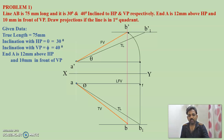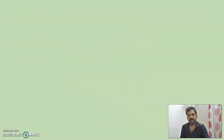I hope you understood this problem. We have marked all the data — theta, phi — and you can also mark alpha and beta, where alpha is the apparent inclination with HP and beta is the apparent inclination with VP.